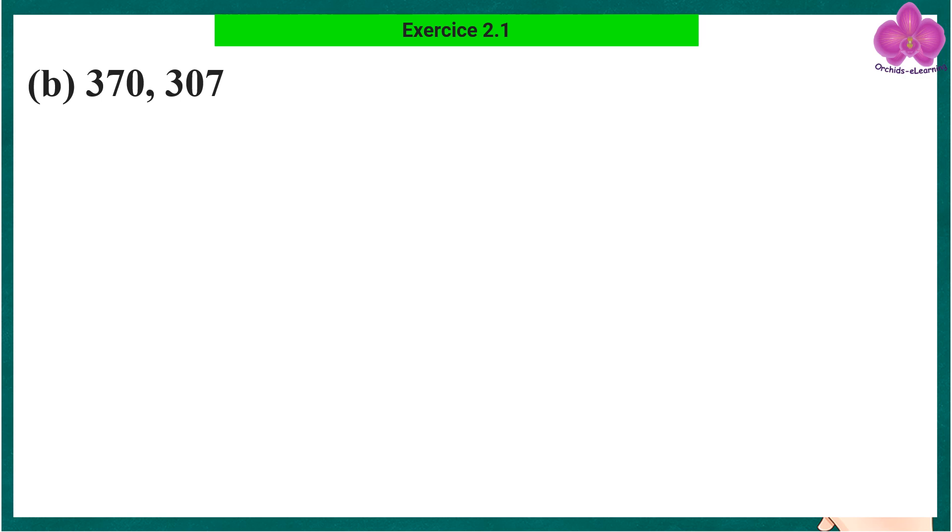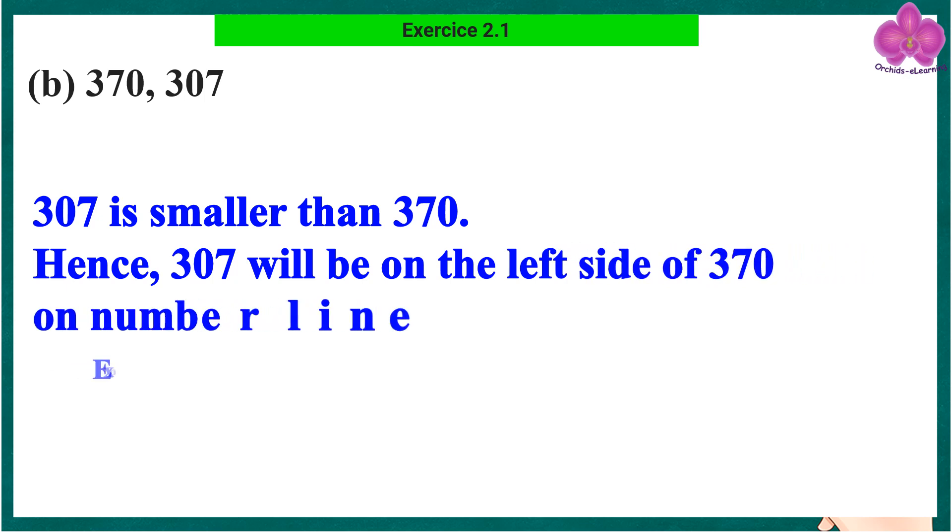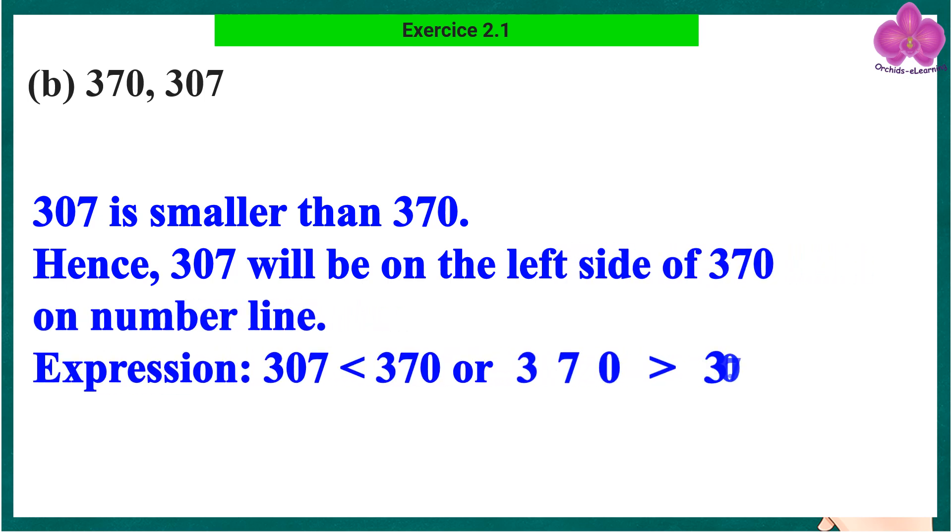Part b: 370 and 307. 307 is smaller than 370. Hence, 307 will be on the left side of 370 on the number line.